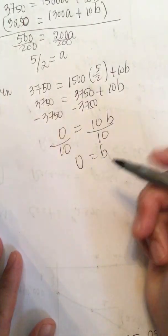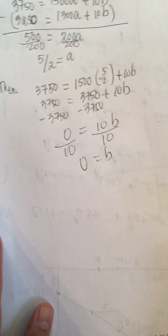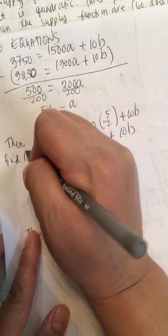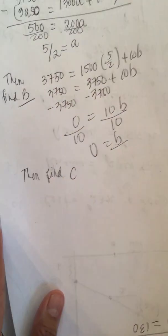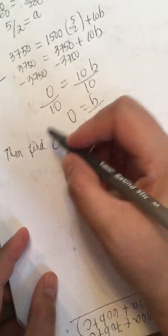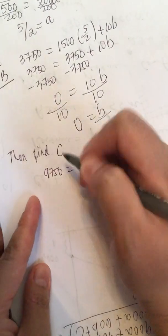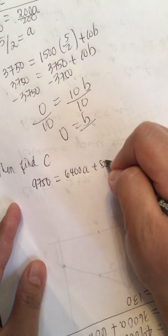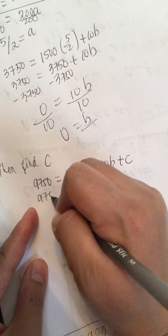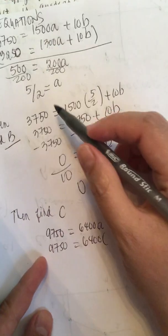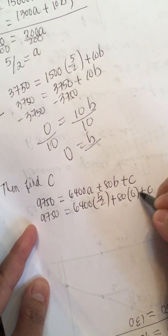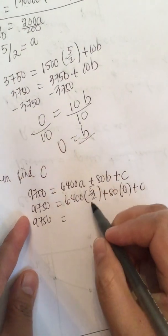Now we find c. We can use any of the three equations. Using f of 80 equals 9750: 9750 equals 6400a plus 80b plus c. We know a equals 5/2 and b equals 0, so 9750 equals 6400 times 5/2 plus 80 times 0 plus c.